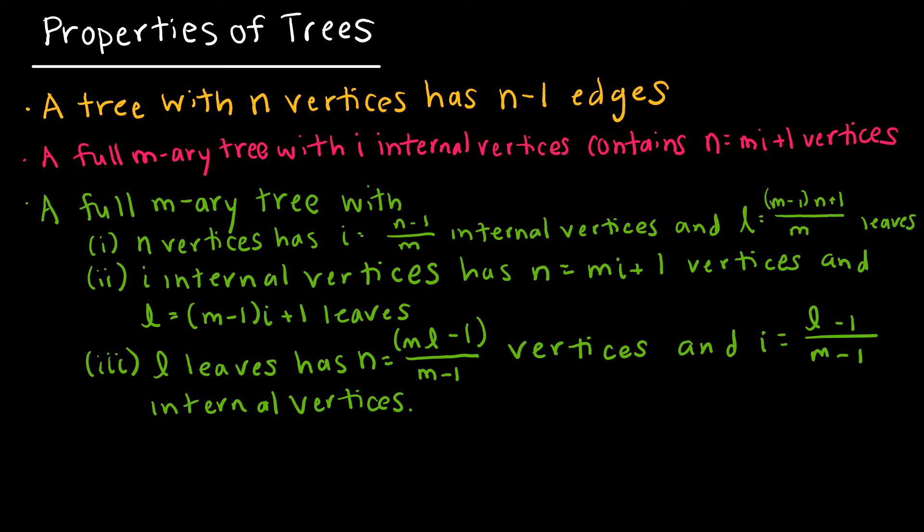A full m-ary tree - remember, a full m-ary tree means each vertex has m number of children with i internal vertices. So all of the internal vertices have m children contains m times i plus one vertices. Does this make sense? Absolutely. Because we got the guy up at the top and then each one of these is going to have, say if it's a three-ary tree, then each has three. And so it certainly makes sense that we would have whatever, in this case three times however many internal vertices there are, plus my root up at the top. A full m-ary tree with n vertices has i equal n minus one over m internal vertices and l equals n minus one times n plus one over m leaves. You get the idea. There's a lot of different formulas that you can use.